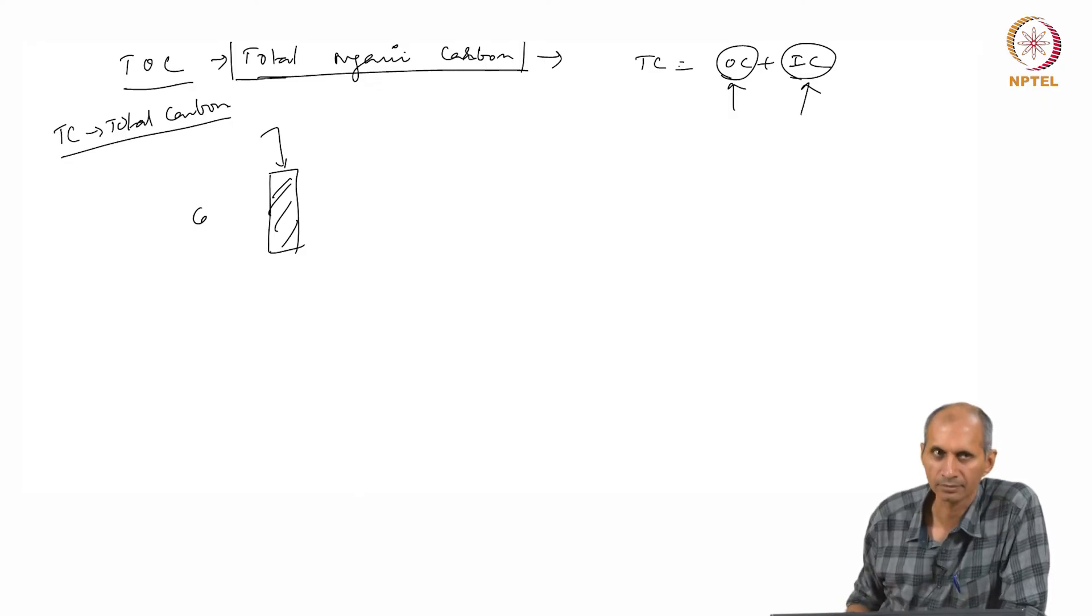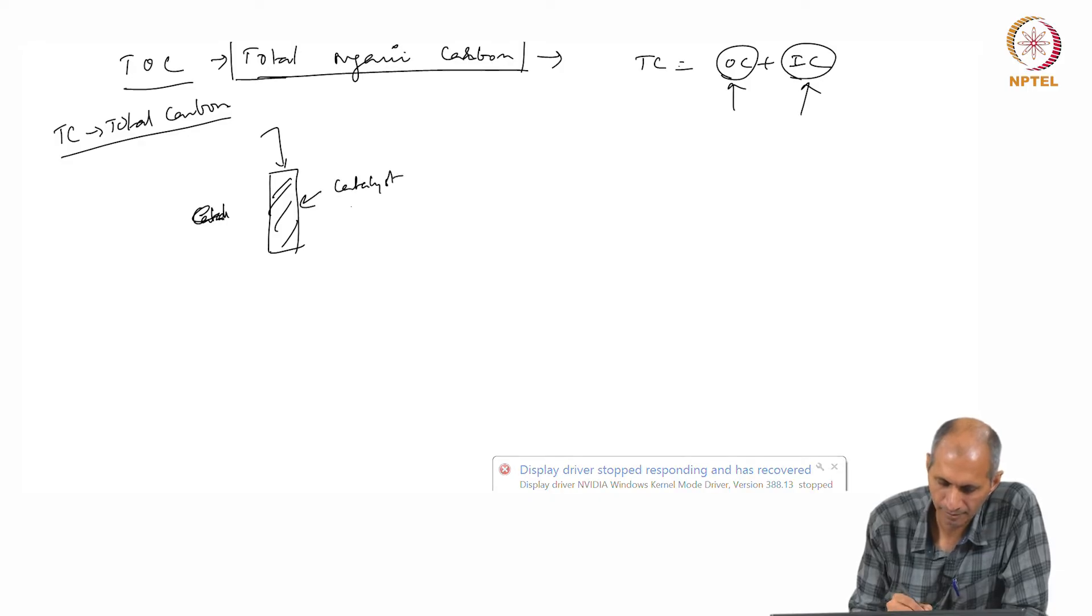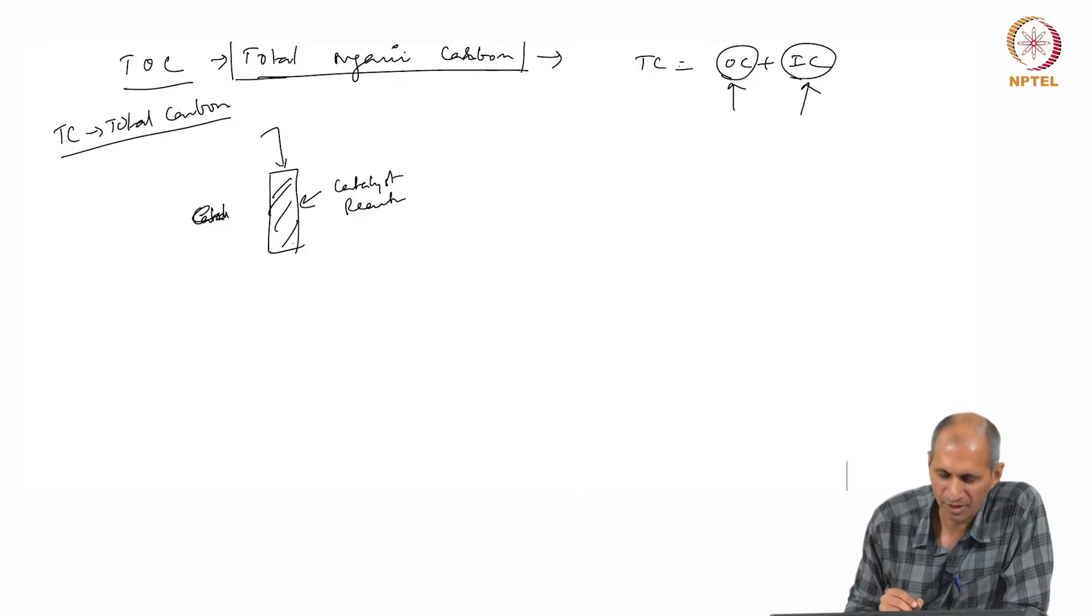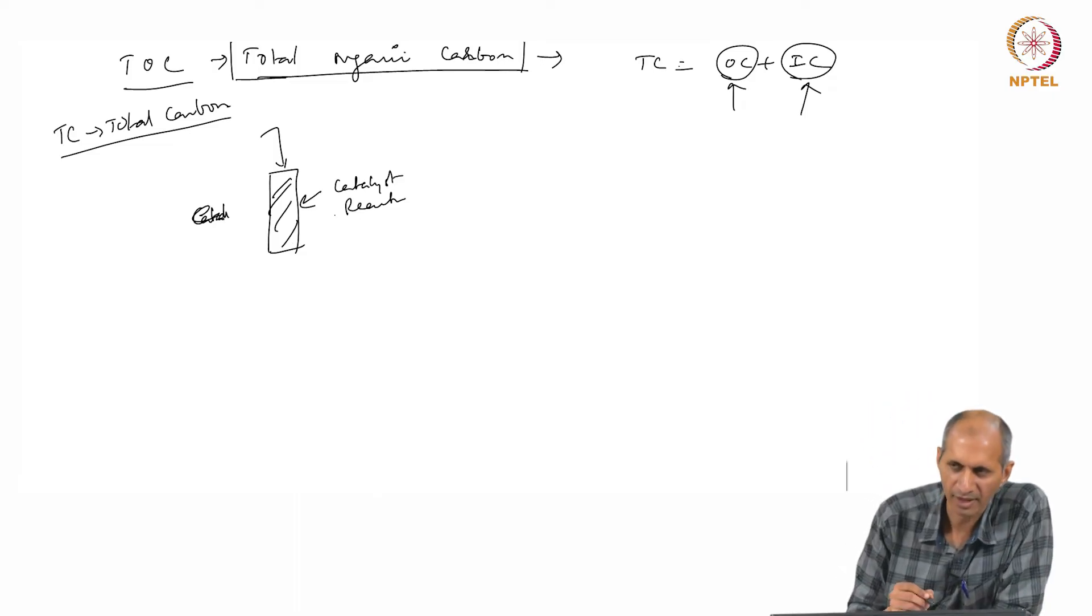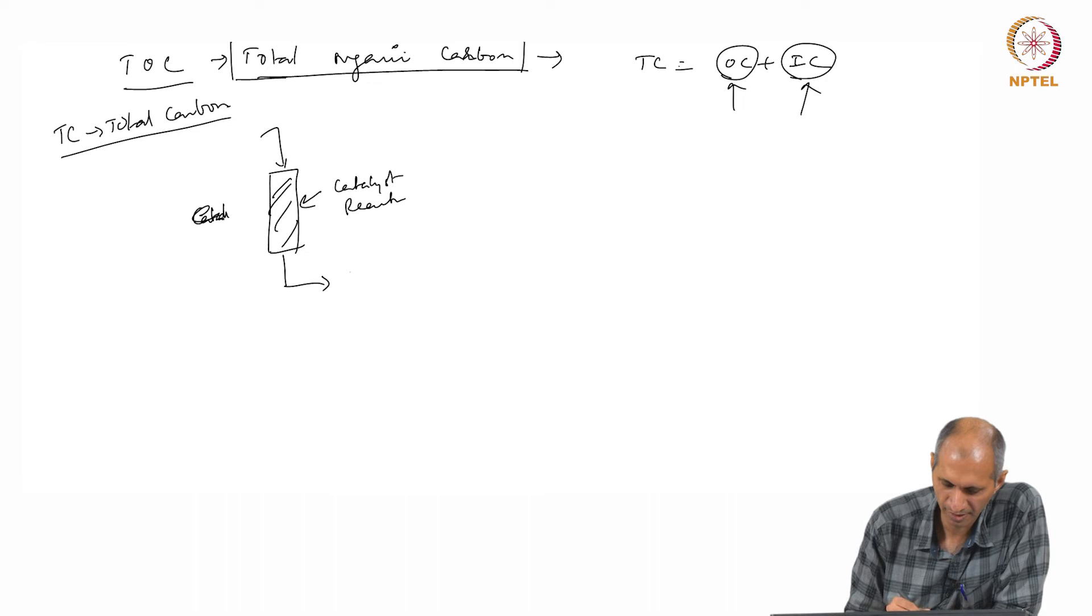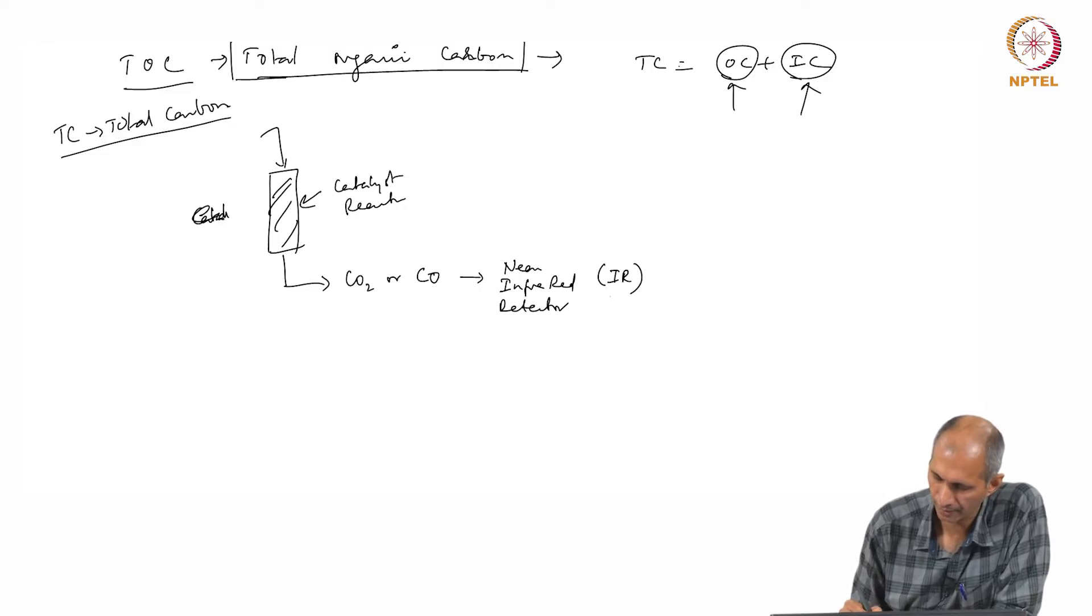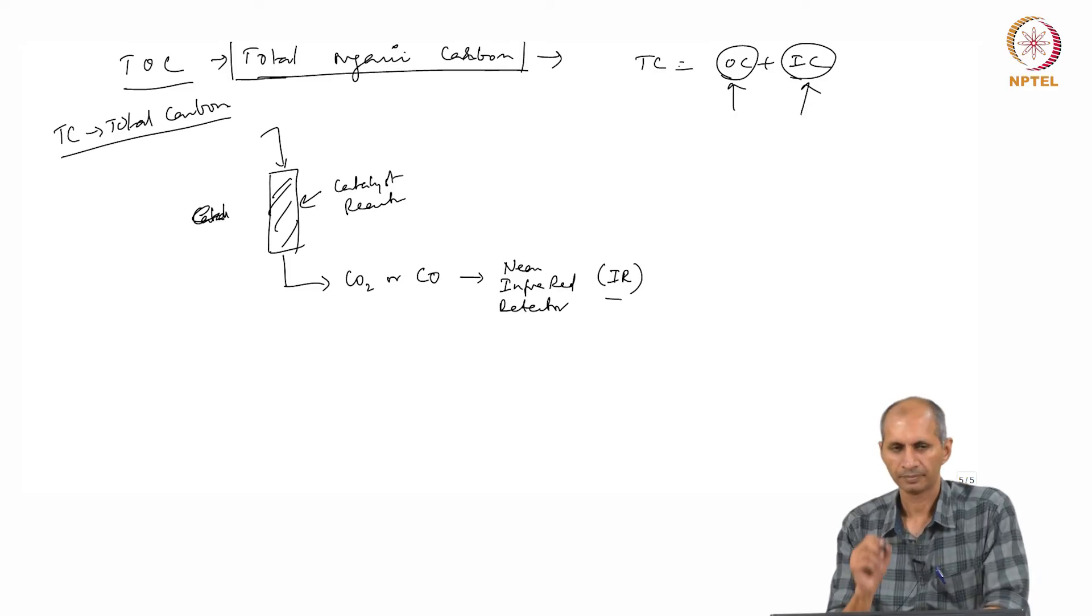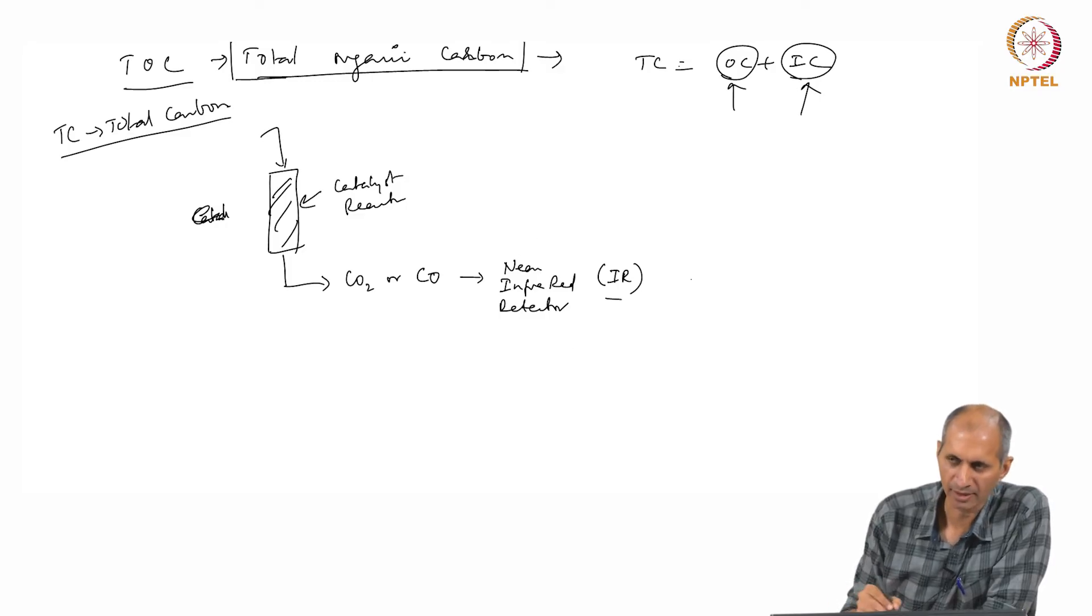The organic carbon—the water is added to a reactor which basically does oxidation. All the carbon is oxidized—catalytic oxidation at high temperature. It will release carbon dioxide or carbon monoxide, and this is measured using a near infrared detector, IR detector.